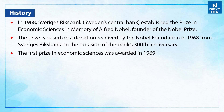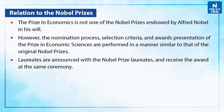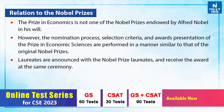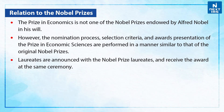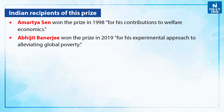The first prize in economic sciences was awarded in the year 1969. The prize in economics is not one of the Nobel Prizes endowed by Alfred Nobel in his will. However, the nomination process, selection criteria and awards presentation of the prize in economic sciences are performed in a manner similar to that of the original Nobel Prizes. Laureates are announced with the Nobel Prize laureates and they receive the award at the same ceremony. Now, who all have been the Indian recipients of this prize? First was Amartya Sen, who won the prize in 1998 for his contributions to welfare economics, and second was Abhijit Banerjee, who won the prize in 2019 for his experimental approach to alleviating global poverty.